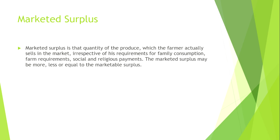Now, when marketed surplus is less than marketable surplus: for example, a farmer has total production of 20 quintals of wheat. He was supposed to sell 10 quintals, but he actually sold only 8 quintals, keeping 12 quintals for family requirements. In this case, the marketed surplus is less than the marketable surplus. Thank you.